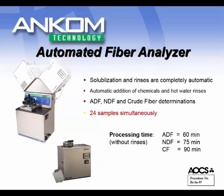Most of you will know that we have two fiber analyzers. The one on the top is our newer automated system — actually close to 10 years old now — and it is newer than our A200, which is the fiber analyzer found on the bottom of the page. Both will do 24 samples at a time, and they will do acid, neutral, and crude fiber determinations. Some of the processing times can be seen on the right-hand side.